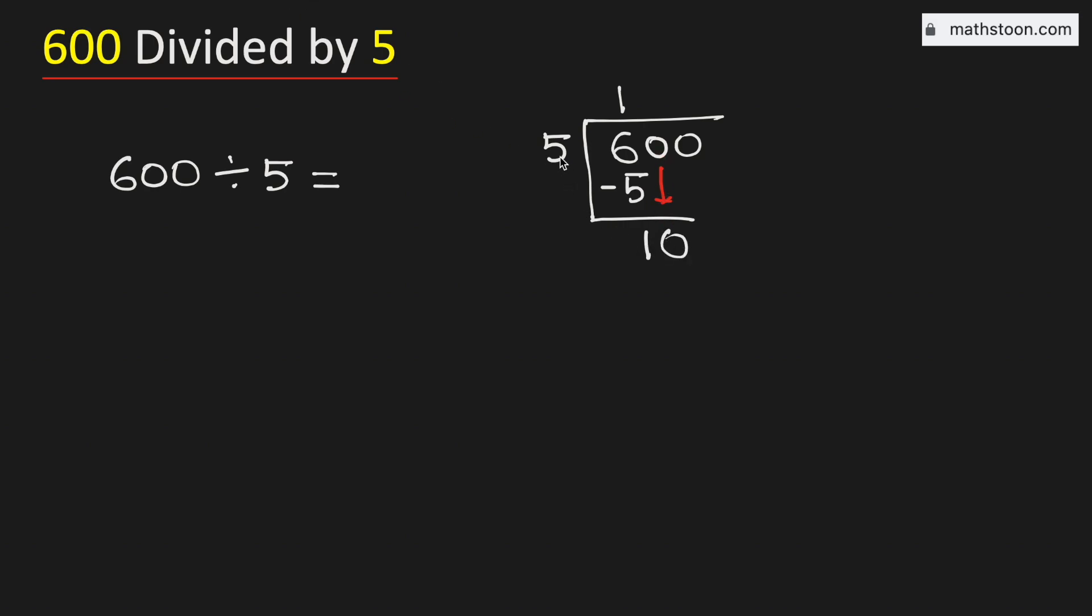Now we know that 5 times 2 is 10. Subtract, we get 0.